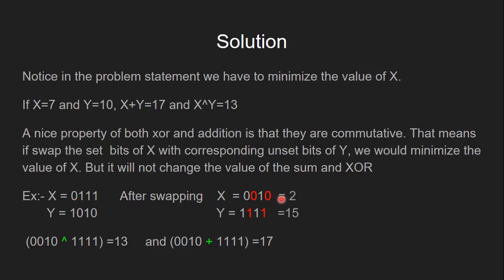Let's see here. Here we have swapped the value of each set bit of X with each unset bit of Y. Now we can see here X has become 2 and Y has become 15. The value of X has decreased whereas the value of Y has increased.